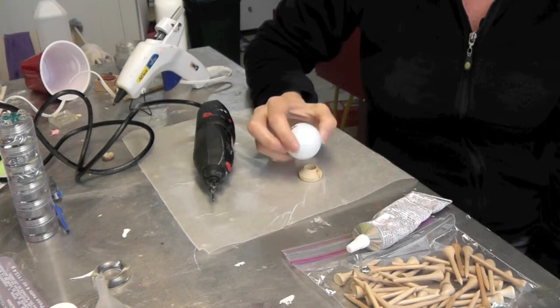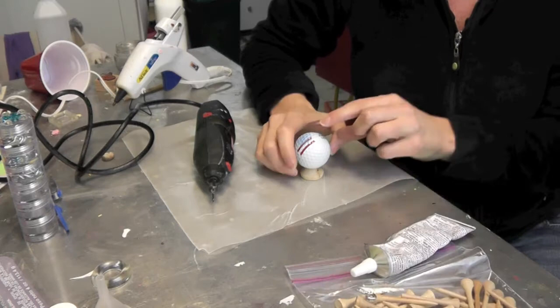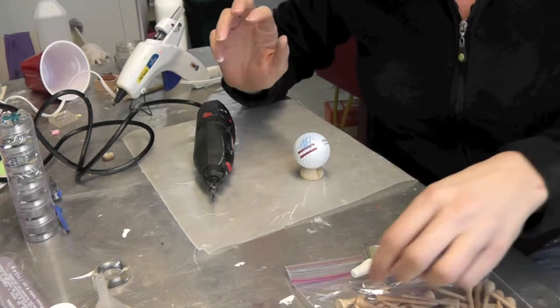We're back in the craft room and today we're going to be making something out of a golf ball. What we're going to be doing is making a sun and it could be garden art or you could just have it hanging in the house or wherever you want.